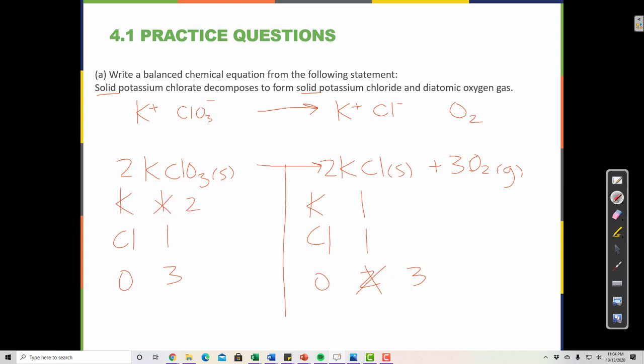Now I have 2 K's, 2 Cl's, and 6 oxygens. Over here I have 2 K's, 2 Cl's, and 3 times 2, 6 oxygens. So now it's balanced.